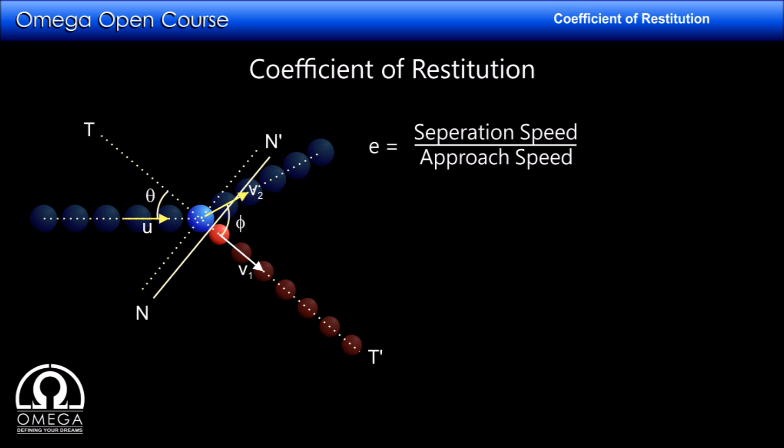The separation speed is v1 minus v2 cos phi and the approach speed is u cos theta, so the coefficient of restitution is (v1 − v2 cos phi) divided by (u cos theta). Since there is no force perpendicular to tt', the component of the blue ball's velocity in that direction is conserved, giving u sin theta equal to v2 sin phi.